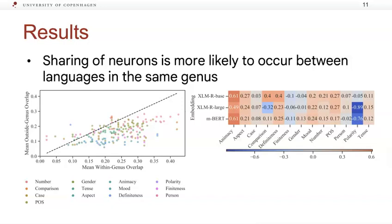we remark that the patterns are strongly influenced by whether a category is atypical for a specific genus. For instance, correlation is highest for animacy, a category almost exclusive to Slavic languages in our sample.